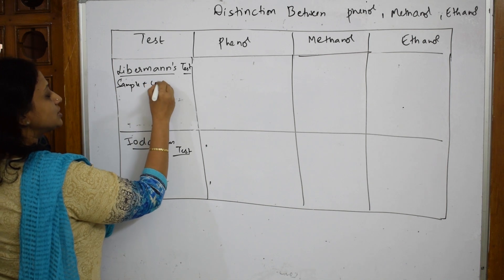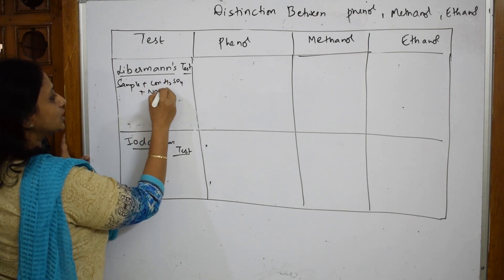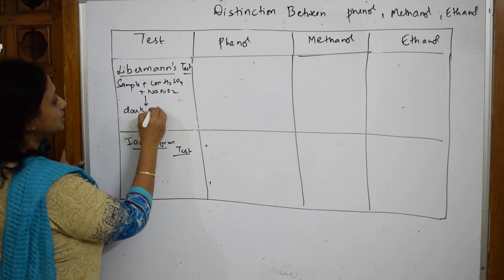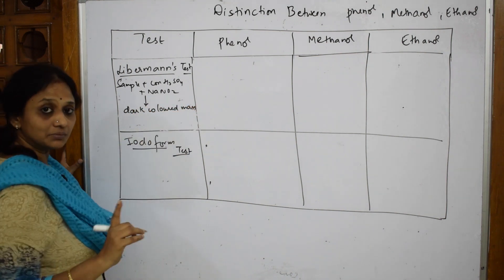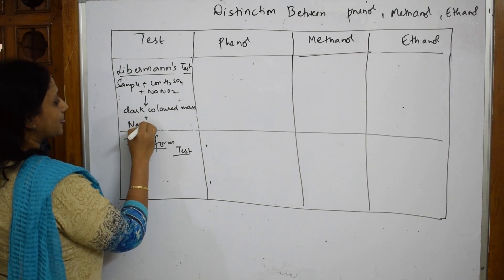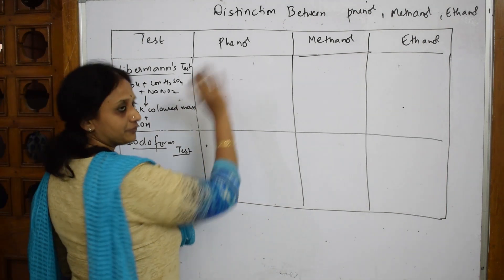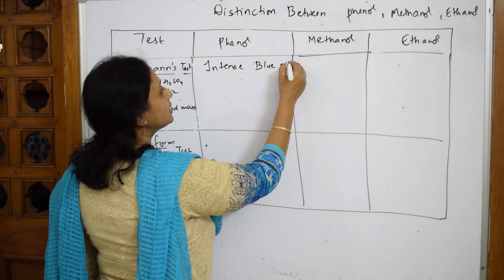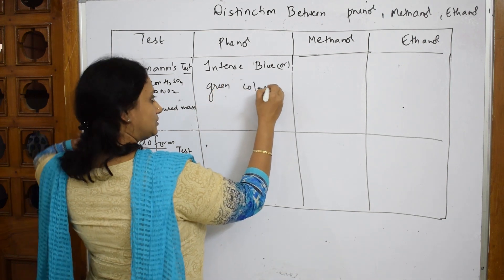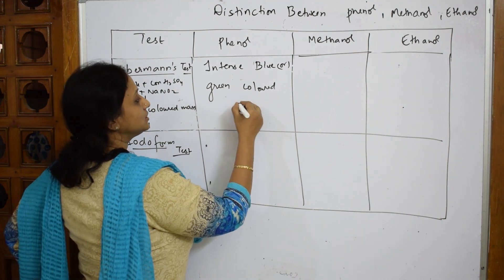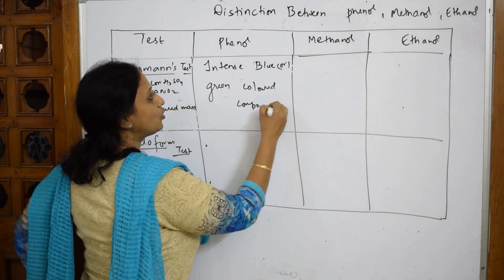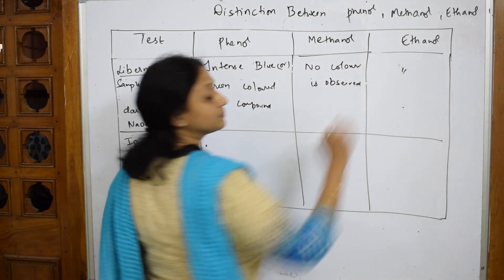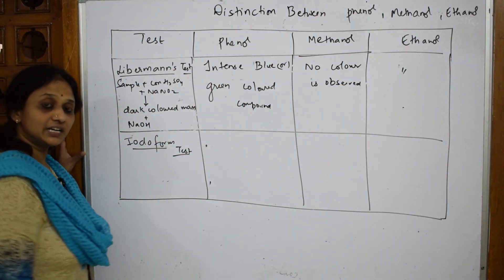With concentrated H₂SO₄ and NaNO₂, you get a dark-colored mass. To this dark-colored mass, add sodium hydroxide (NaOH). For phenol, you get an intense blue-green colored compound. For methanol and ethanol, no color is observed — write 'no color observed' in full words.